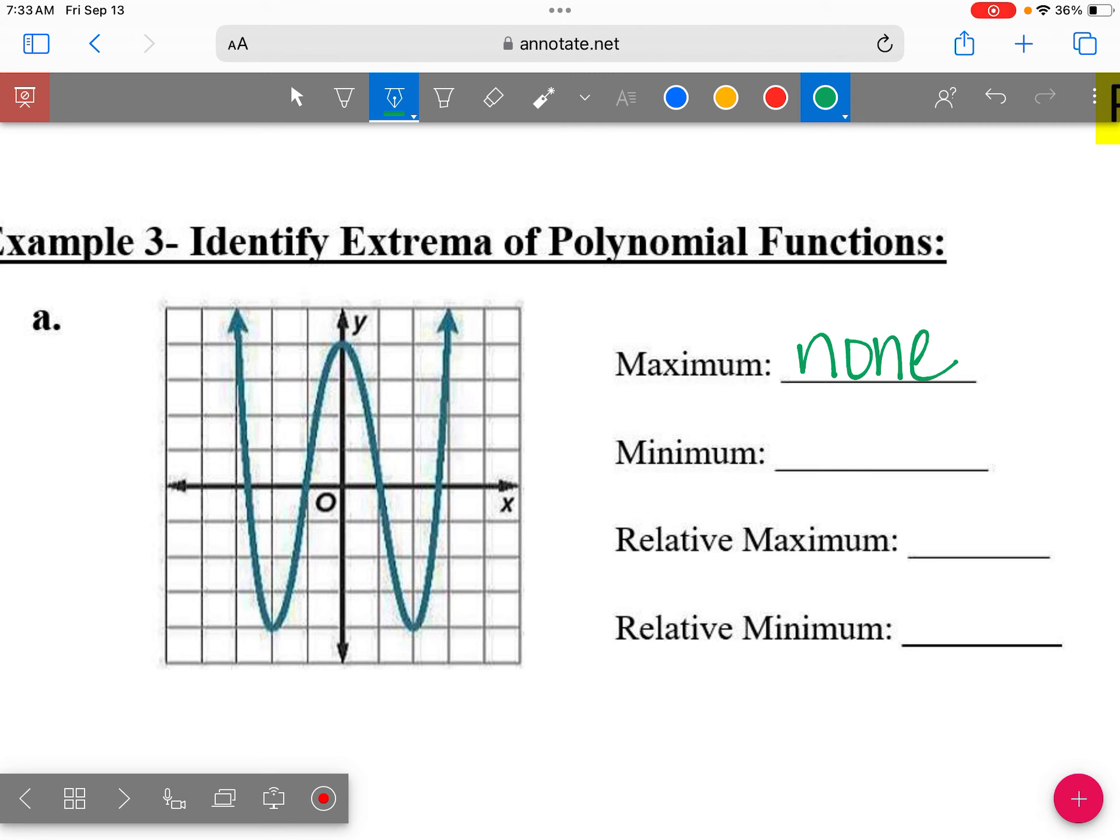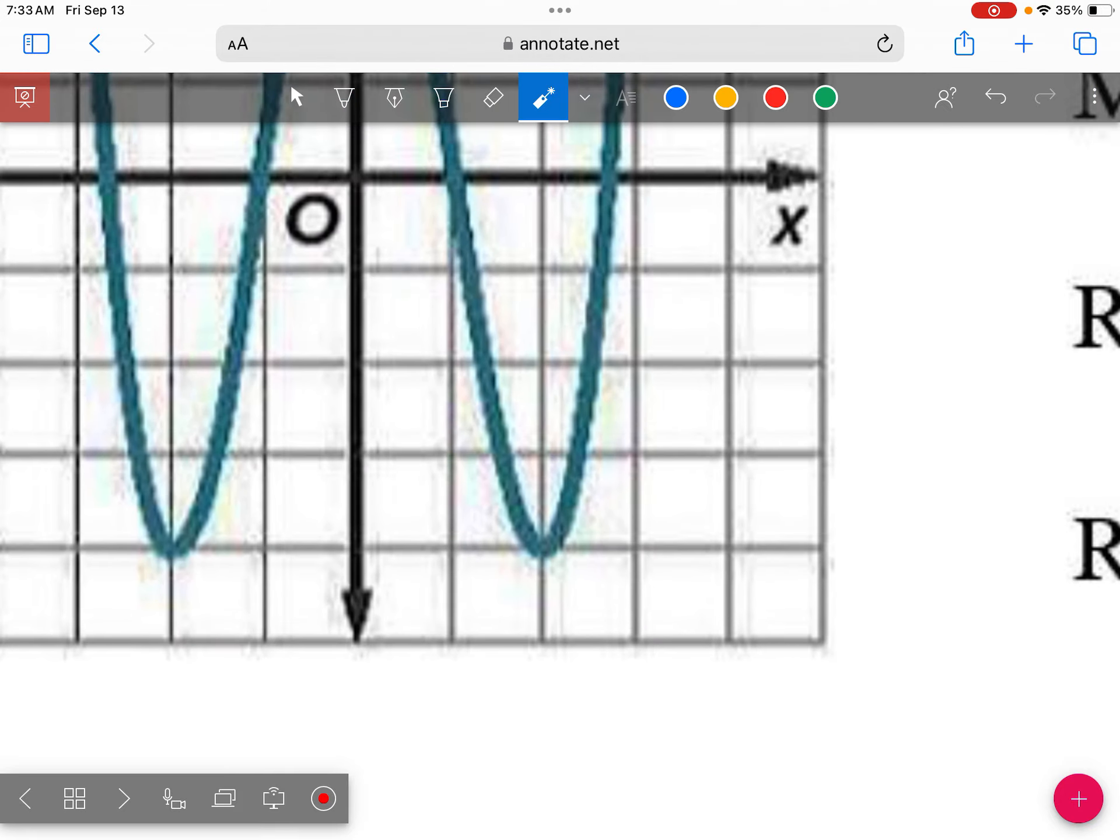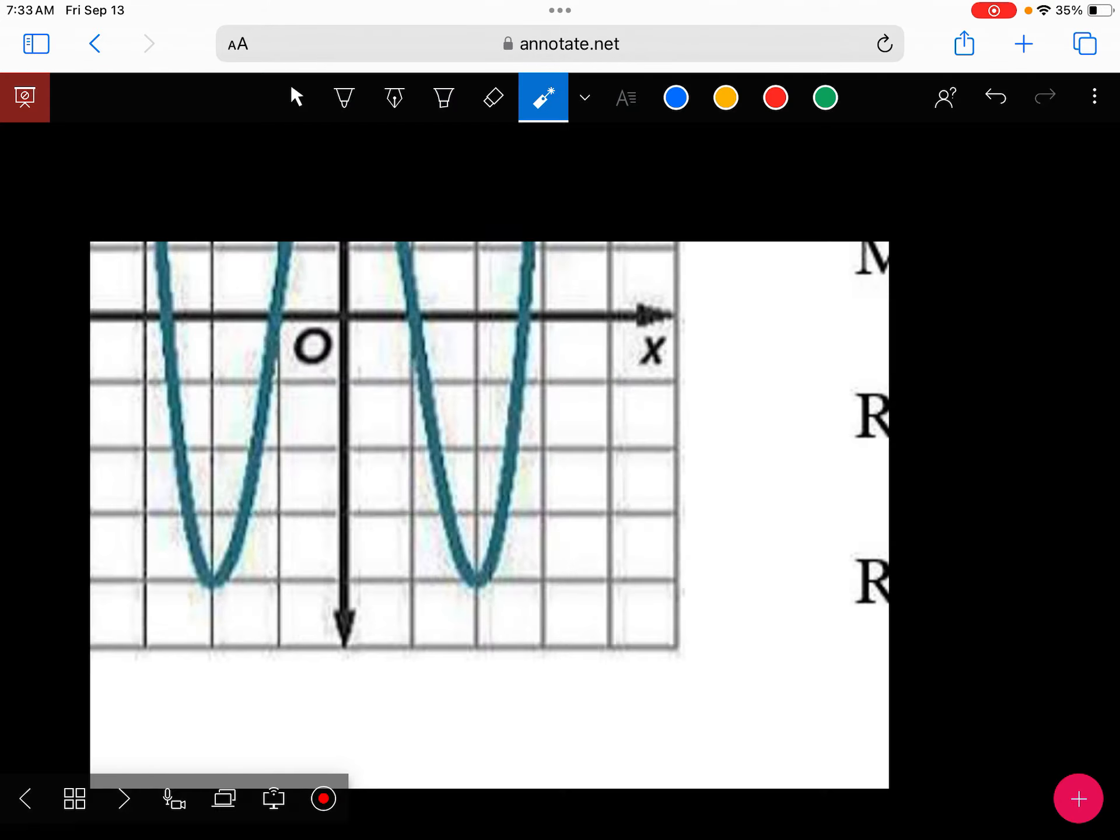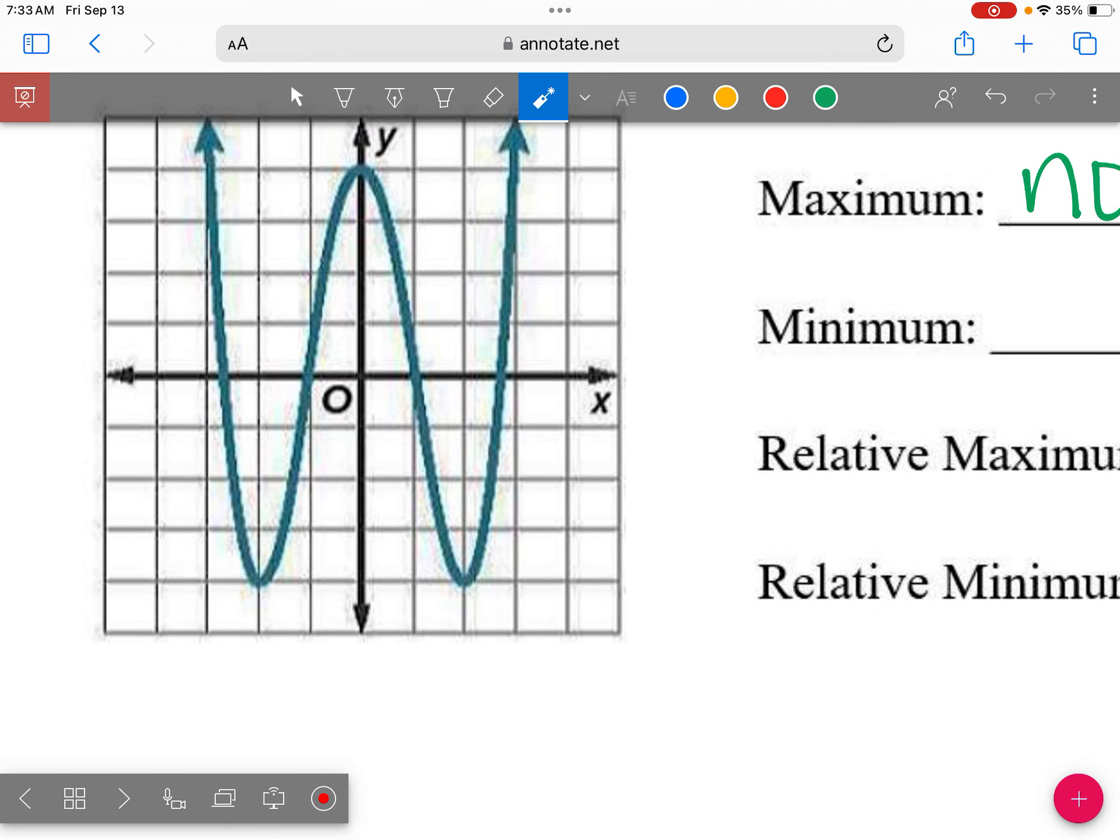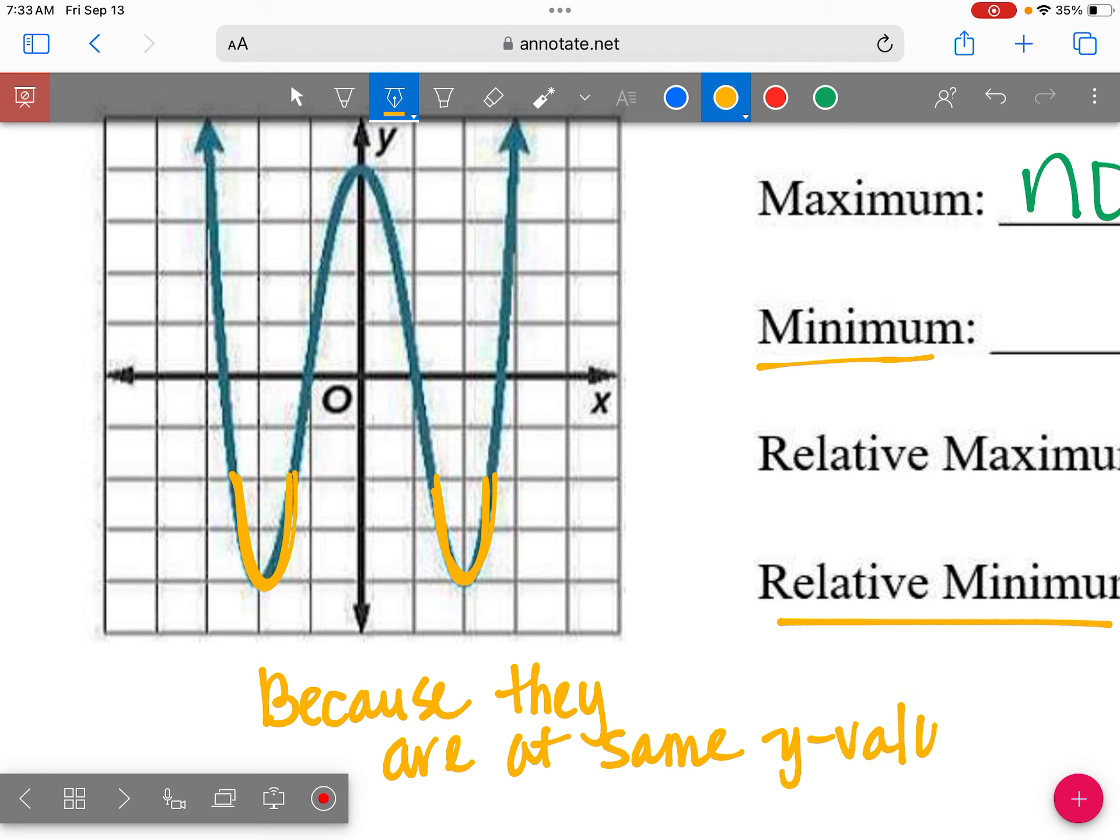Now for this one, can we tell which one is the lowest? It looks to me like they're the same. Okay. So because they're the same, we're going to list them both for minimums and relative mins. So again, any place you see a smile. So we have a smile here and we have a smile here. Both of those would be my minimum and my relative minimum because they're at the same place. So because they are at the same y value, then they're both mins.